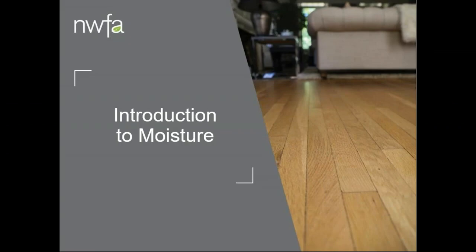First things first — introduction to moisture. The biggest myth is that water and wood don't mix, and that's not necessarily true. Christopher Columbus came over here on a boat made out of wood. Your outdoor deck is made out of wood. It's unexpected loss or gain of water that's a problem. We built basketball courts out of maple in buildings without air conditioning for years, but when we turned the air conditioner on, things got a little weird. So you've got to let the wood acclimate to the environment that it's going to be in.